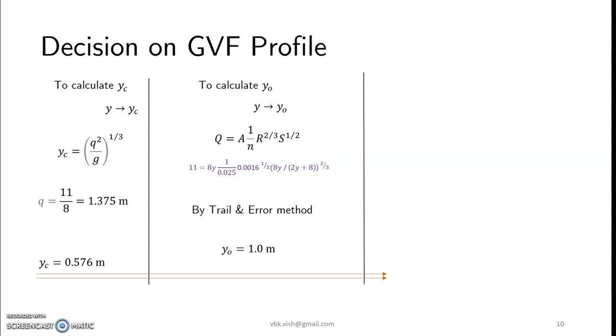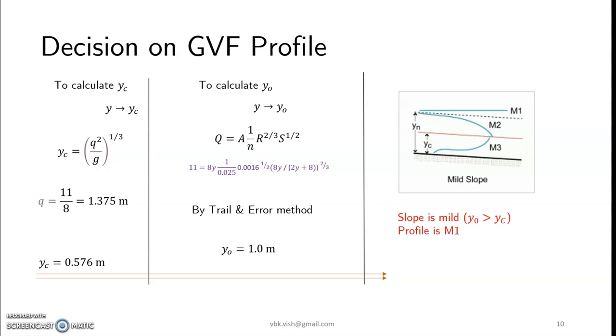Y is 2 meters. So with the help of all these things we try to attain our decision on the slope. Slope is mild because y0 is greater than yc. Now y which is 2 meters is even greater than y0. So the profile would be M1.